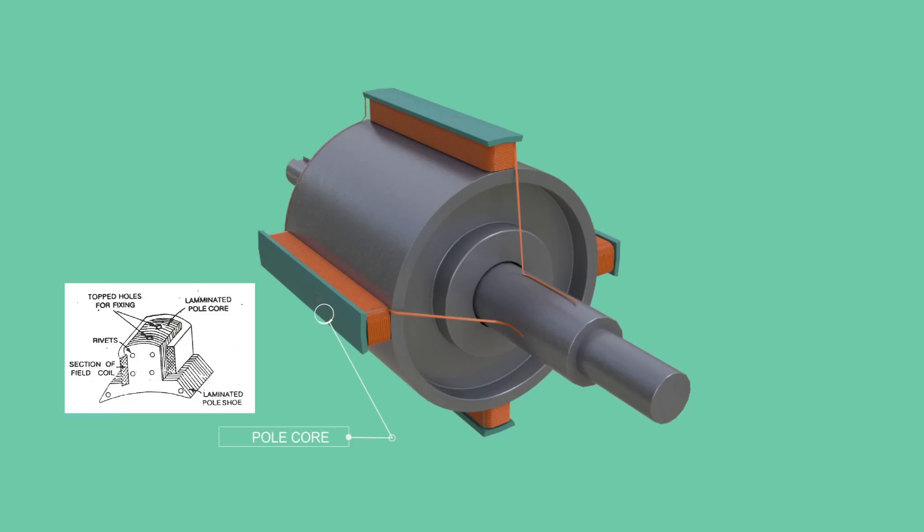Pole core is used to effectively transfer magnetic flux, and they are made with fairly thick steel lamina. Such insulated lamina reduces energy loss due to eddy current formation.